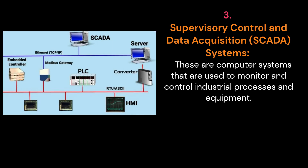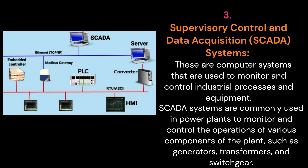3. Supervisory Control and Data Acquisition, SCADA, Systems. These are computer systems that are used to monitor and control industrial processes and equipment. SCADA systems are commonly used in power plants to monitor and control the operations of various components of the plant, such as generators, transformers, and switchgear.